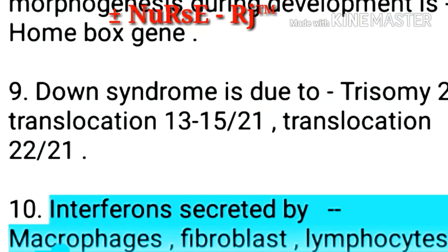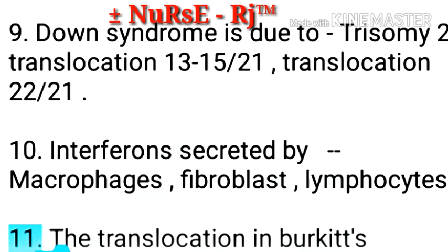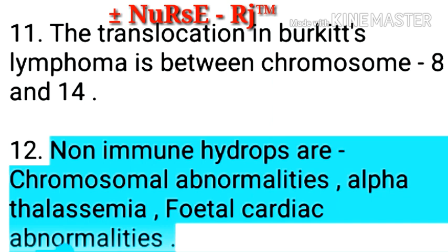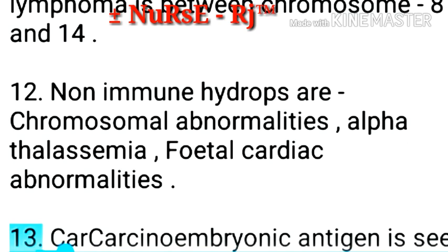Point 10: Down syndrome is due to trisomy 21, translocation 13-15, 21 translocation, and 22-21 translocation. Point 11: Interferons are secreted by macrophages, fibroblasts, and lymphocytes. Point 12: The translocation in Burkitt lymphoma is between chromosomes 8 and 14. Non-immune hydrops includes chromosomal abnormalities, alpha thalassemia, and fetal cardiac abnormalities.